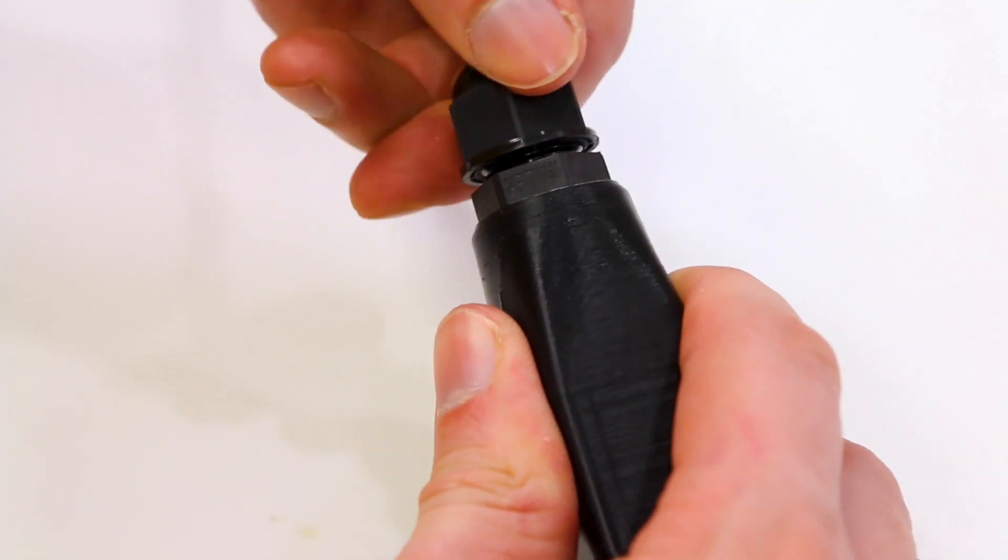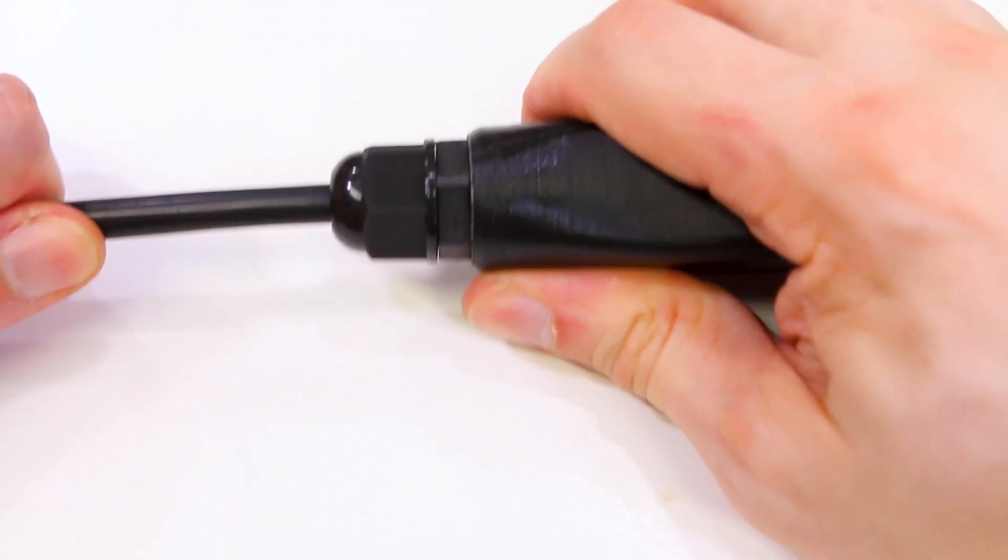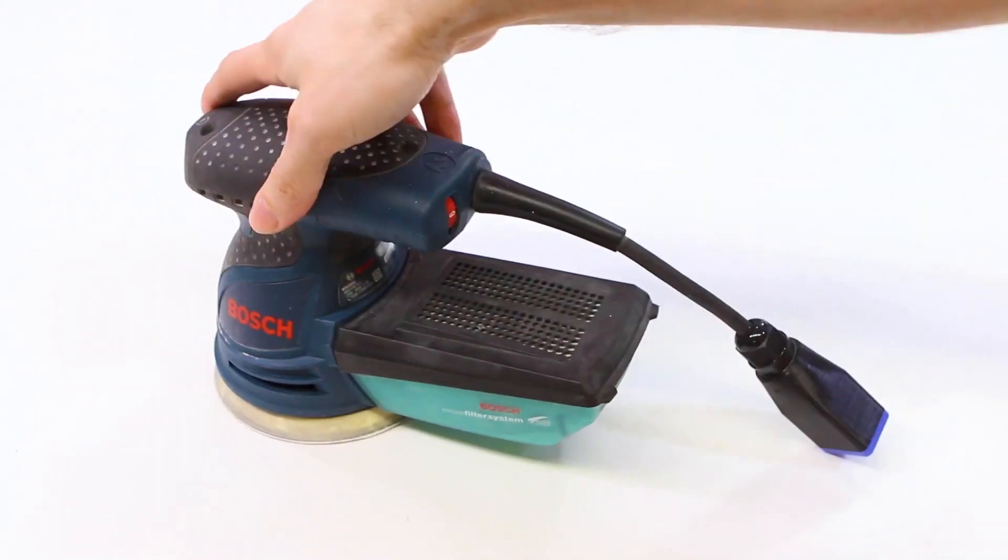Now, here's where the strain relief comes into play. It clamps down on the wire right here at this point, so that if it gets tugged, it gets tugged at that point, and it doesn't just yank the wires right off the blades. And that's it for that part.